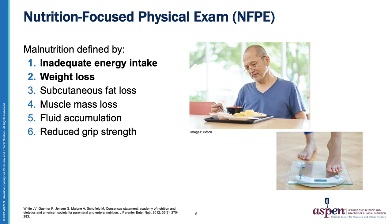During telehealth, adjustments may be needed because data to assess all six malnutrition characteristics may not be available. Two of the six malnutrition characteristics — energy intake and weight loss — are emphasized as the minimum data required to assess risk for malnutrition.